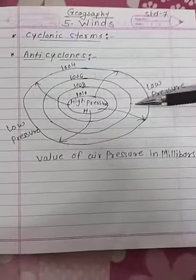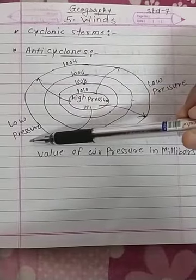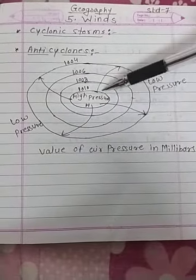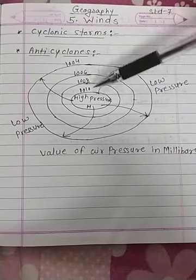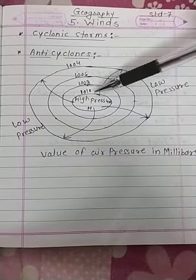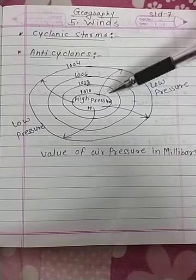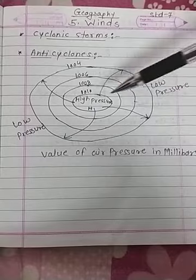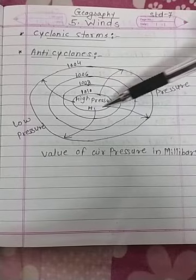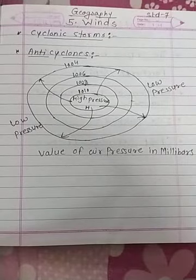Opposite of that, here is the anti-cyclone. Here you will see high pressure in the center and low pressure outside. That means it works from the high pressure towards the low pressure — 1010, 1008, 1006, 1004 — the pressure is reduced towards the outside area. It works from high pressure towards low pressure. That is what we call an anti-cyclone.